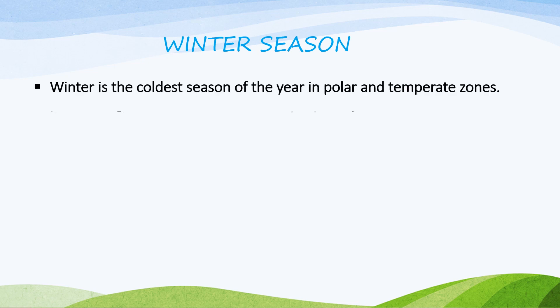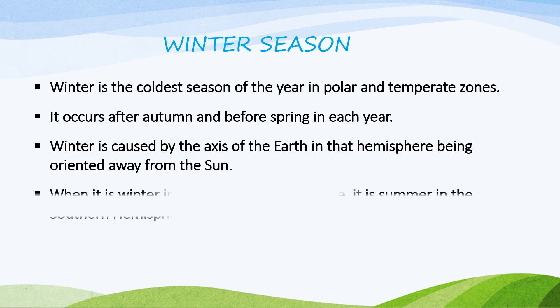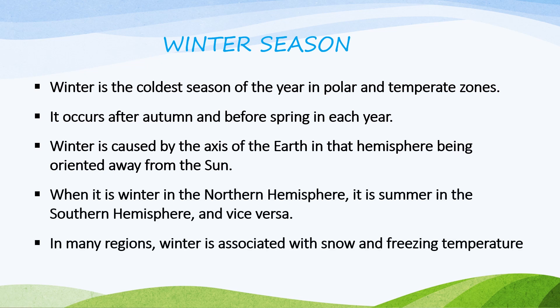Winter is the coldest season of the year in polar and temperate zones. It occurs after autumn and before spring each year. Winter is caused by the axis of the earth in that hemisphere being oriented away from the sun. When it is winter in the northern hemisphere, it is summer in the southern hemisphere and vice versa. In many regions, winter is associated with snow and freezing temperatures.